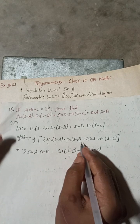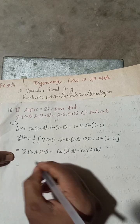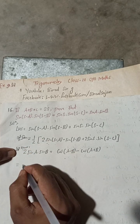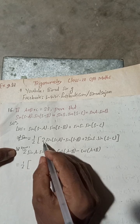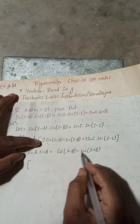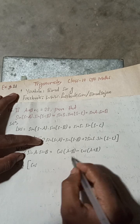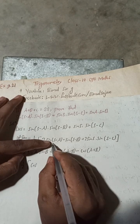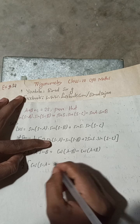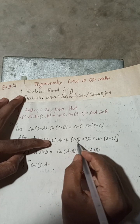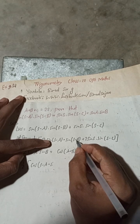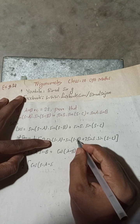Applying the formula to the first term, 2·sin(s−a)·sin(s−b): our A is (s−a) and our B is (s−b). So we write cos[(s−a) − (s−b)] minus cos[(s−a) + (s−b)]. Expanding the bracket, the minus and minus give plus b.